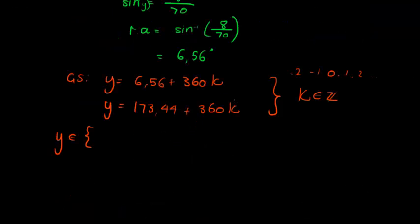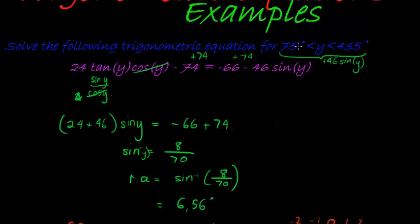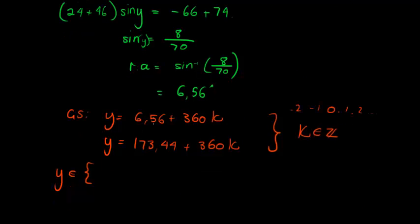So first of all, if k is equal to 0, in this case, I get 6.56. However that's too small, the smallest value allowed is 75 degrees, so k can't be 0. How about 1?